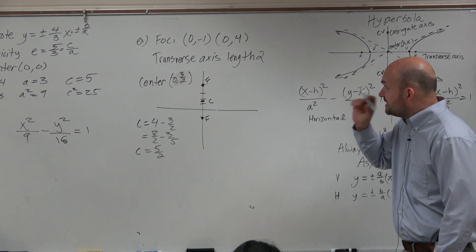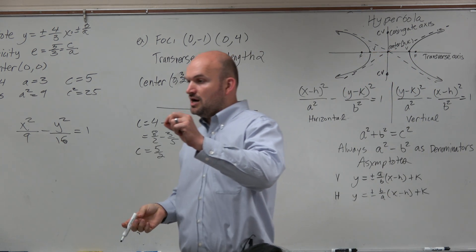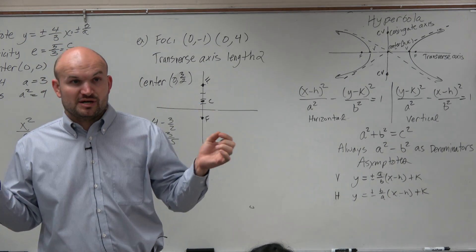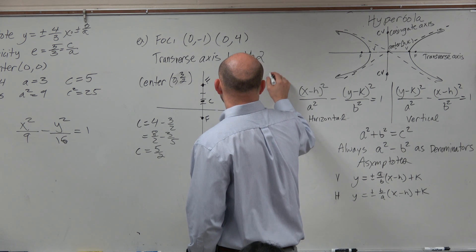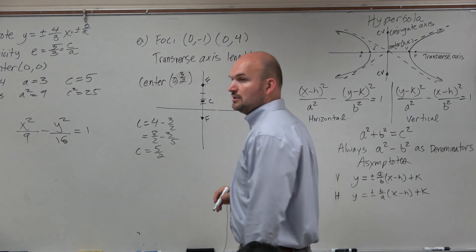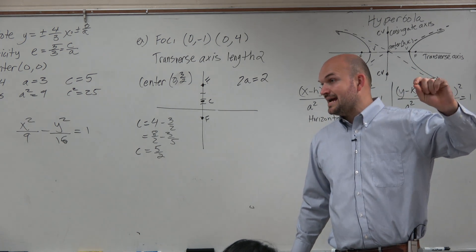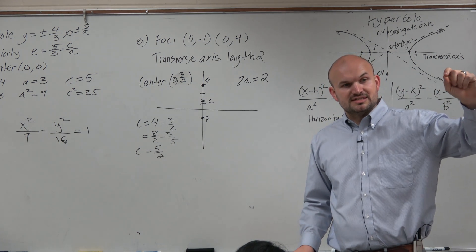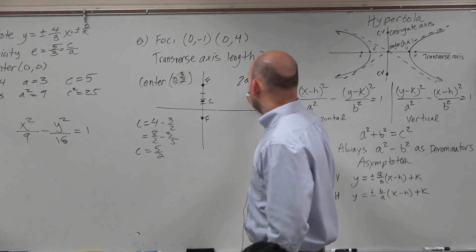The next one is they give us the transverse axis length of 2. Transverse axis is going to be our axis from our vertex to our vertex or between our two vertices. So therefore, we can say 2a is equal to 2, right? Because the distance from the center to your vertex is a, so the distance between your two vertices would be 2a. So therefore, a is equal to 1.